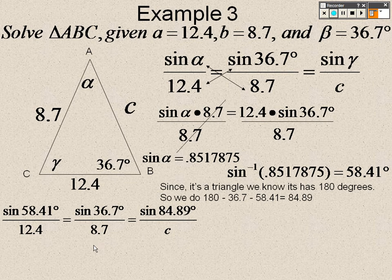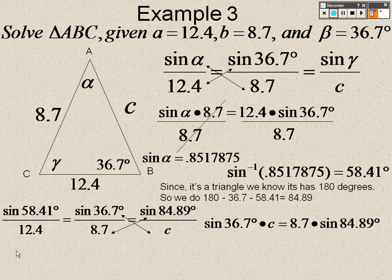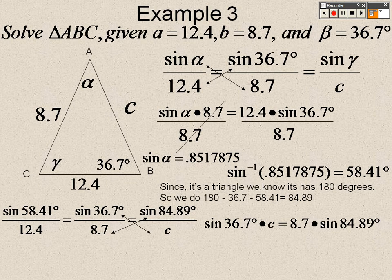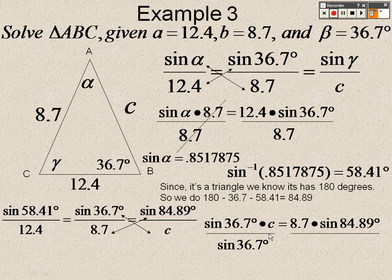So I can cross multiply these two. Or I could cross multiply the ones in the end. Either way, I'll get the answer. So I get sine of 36.7 times C equals 8.7 times sine of 84.89. I want to get C by itself, so I divide both sides by sine of 36.7. And we get about 14.5 as our answer for example 3.